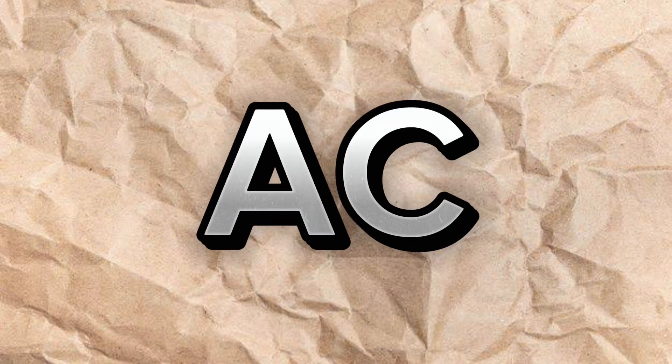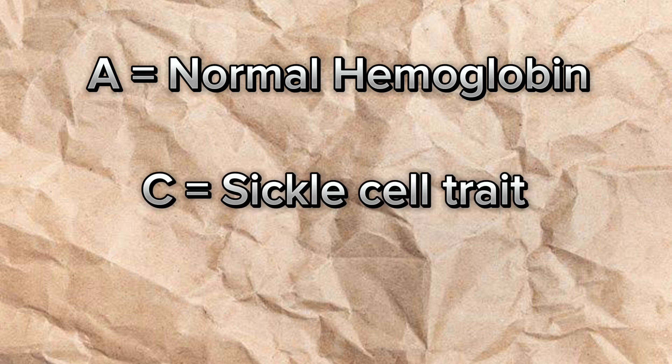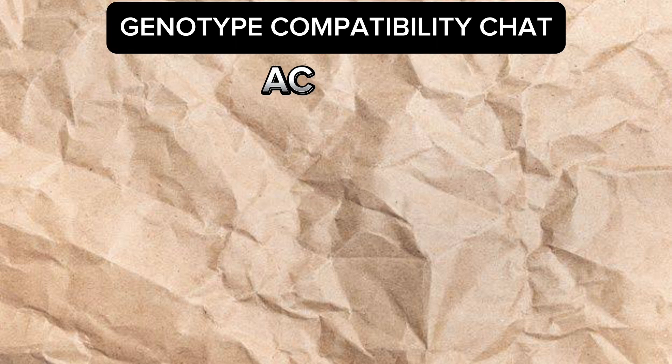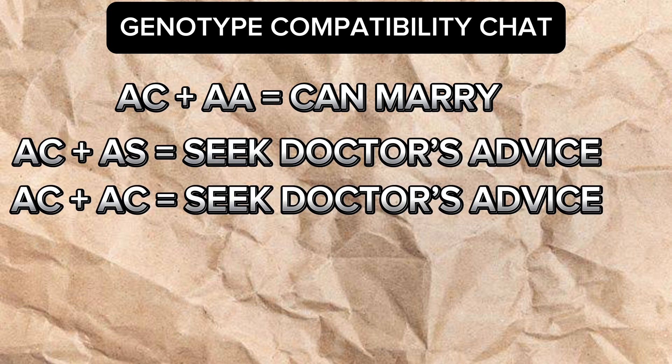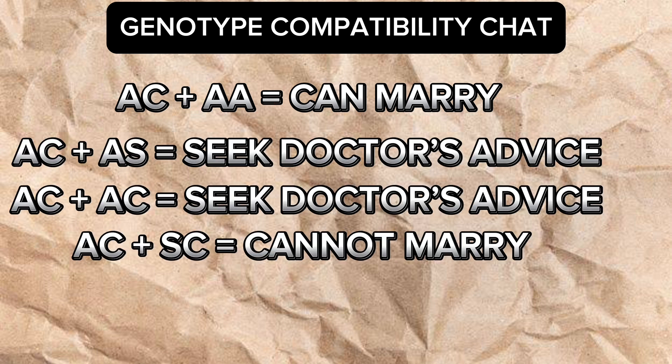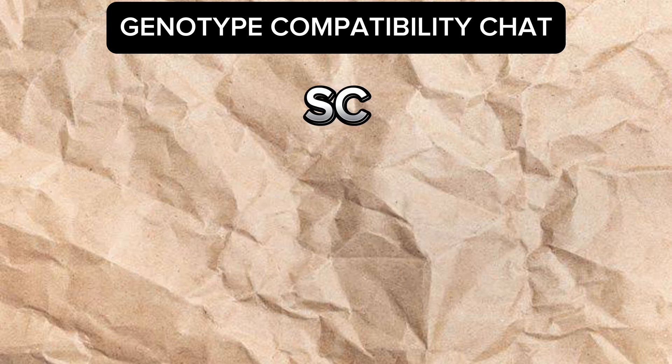There's not much to say about the AC genotype. The AC genotype has one normal hemoglobin from one parent and a C which is a sickle cell trait — just like AS but it's rare. AC is a very rare genotype and can only marry AA. AC plus AS should seek advice. AC plus AC should seek advice. AC plus SC cannot marry. AC plus SS cannot marry.